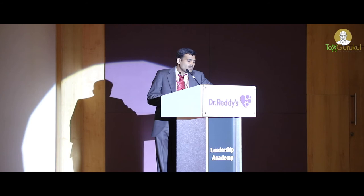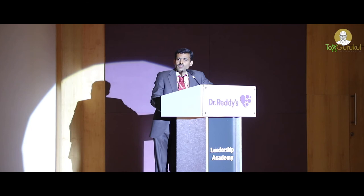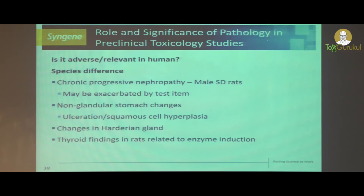The next question is: you have seen an adverse finding — is it relevant to human beings? To answer this question, species differences have to be taken into account. Chronic progressive nephropathy is actually a unique phenomenon for male rats, especially Sprague-Dawley male rats — a similar condition does not occur in human beings. Even though the test item exacerbates chronic progressive nephropathy in rodents, this is considered not relevant to human beings.